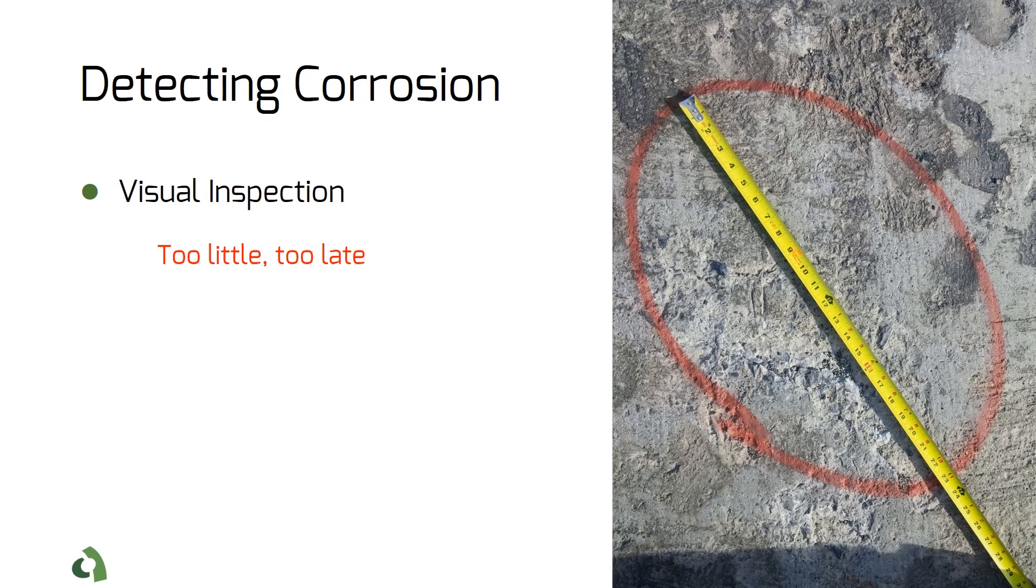Signs of corrosion are often marked with delamination, which is the result of corrosion materials expanding. Visual inspection is often performed with chain dragging tests to identify the delaminated areas. At this stage, there is not much left to do except repair.